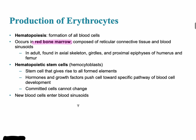Red blood cells are originally produced in the red bone marrow, and this process is called hematopoiesis — also seen as hemopoiesis. In adults, this occurs in the axial skeleton, the hip girdles, and the proximal epiphyses of the humerus and femur. This is why bone marrow is extracted by injecting a needle into the hip area, which is a very painful procedure.